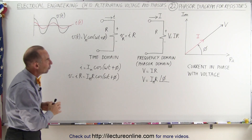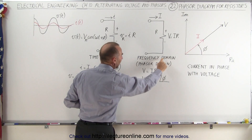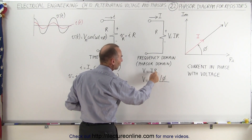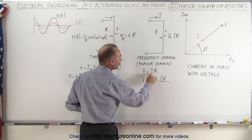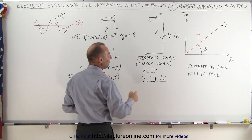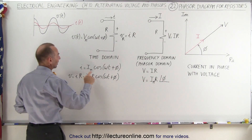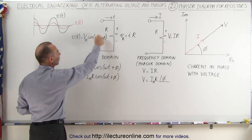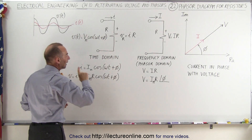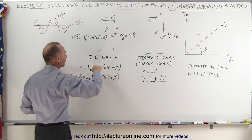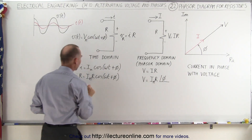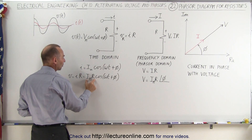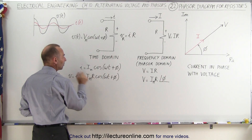So how do we represent that in the frequency domain — also called the phasor domain? The voltage is equal to the current times the resistance, and we use capital letters to indicate voltage and current in the frequency domain. If we write that with a phase angle, the current is equal to the maximum current times the cosine of omega t plus phi. Since they're in phase, they have the same equation, and the maximum voltage is represented by the maximum current times the resistance.